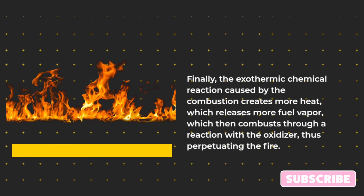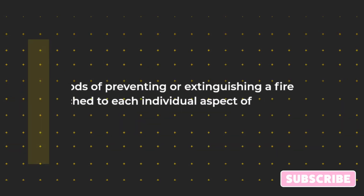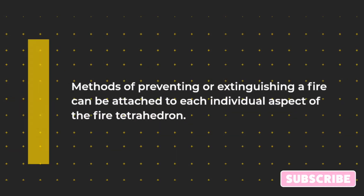This cycle perpetuates the fire. Methods of preventing or extinguishing a fire can be attached to each individual aspect of the fire tetrahedron.